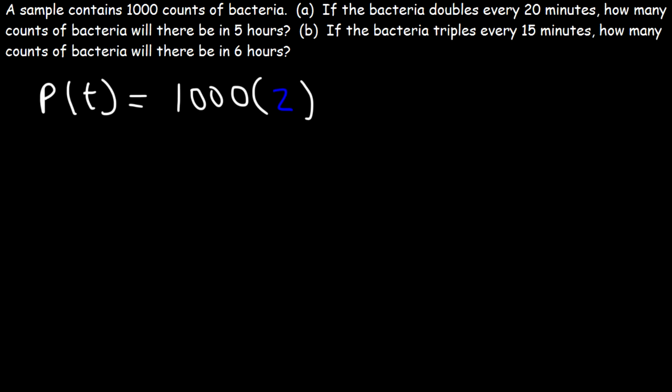Because every 20 minutes is going to double. If you plug in 20, 20 over 20 is 1. 2 to the first is 2, so it doubles. If you plug in 40, 40 over 20 is 2. 2 squared is 4. So it doubles twice, which is equivalent to 4. So that's the equation if you want T in minutes.